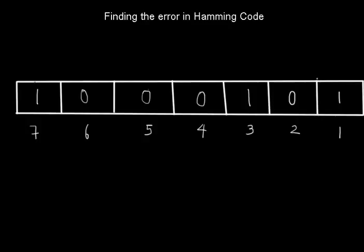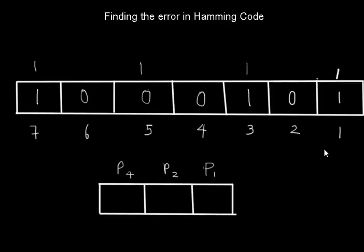P1 block, we will have to check 1, 3, 5, and 7. In 1, 3, 5, 7, if the number of ones are even, then there is no error in the block corresponding to P1. So let's count: 1 has 1, 3 has 1, 5 has a 0, and 7 has a 1.